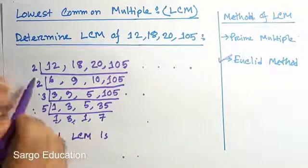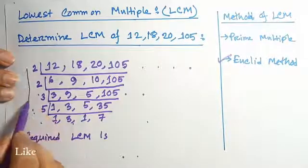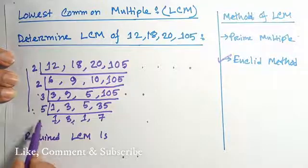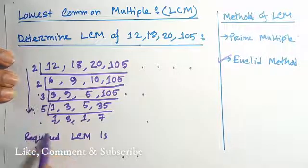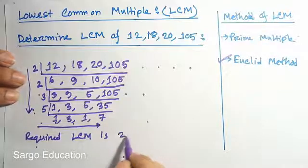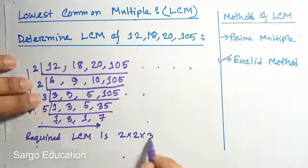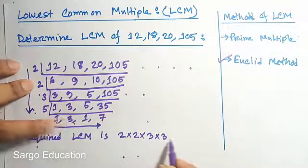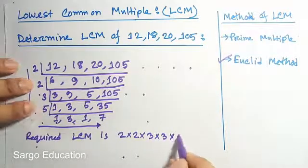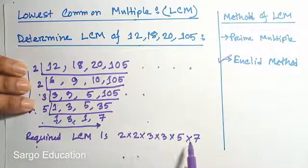In GCF we take only the common numbers, but in LCM we take these numbers and these numbers also. So we write 2 times 2 times 3 times 3 times 5 times 7. After multiplying all these numbers we get the result is 1260.